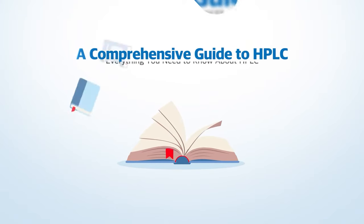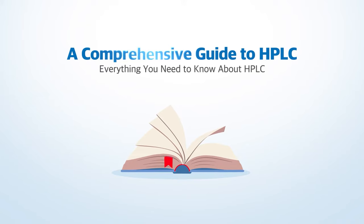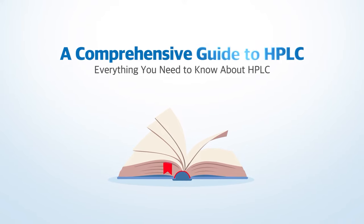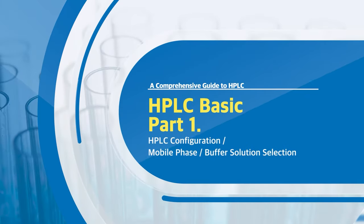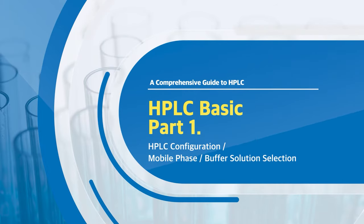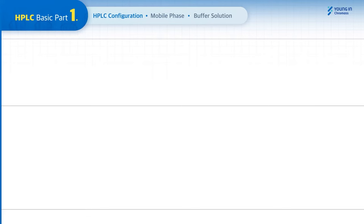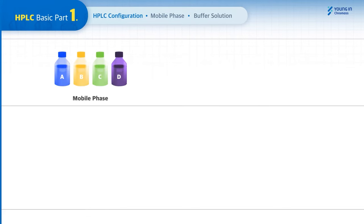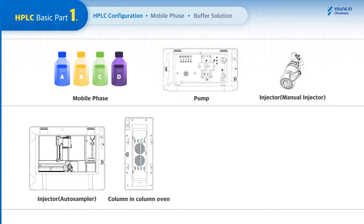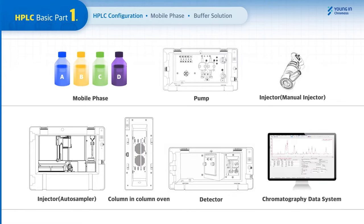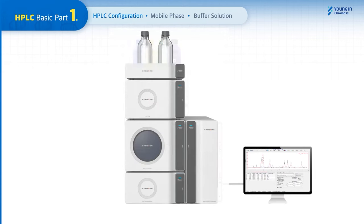A comprehensive guide to HPLC. Generally, HPLC is configured with a mobile phase, a pump (also called a solvent delivery module), an injector which can be either a manual injector or auto sampler, a column, a detector, and a CDS chromatography data system. Once each module is configured into an HPLC system, it can show how the flow goes through the HPLC.